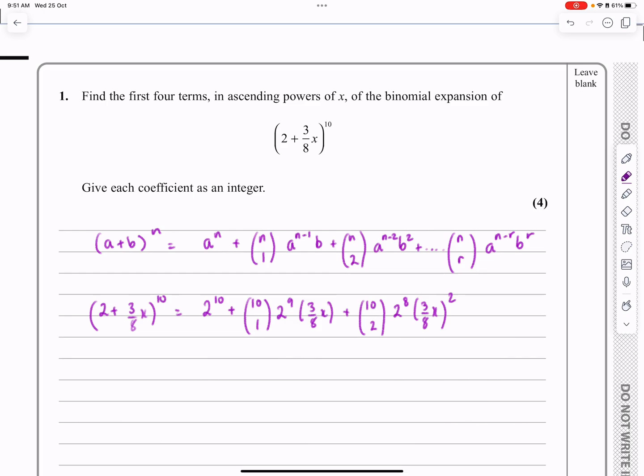So in this case, what do they want? First four terms, so 1, 2, 3, one more term. So 10C3, 2 to the 7, 3/8 X cubed as we're going through.